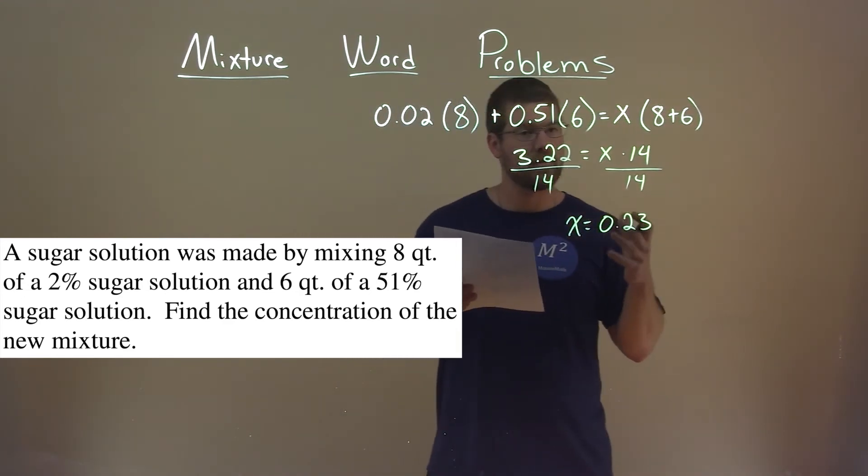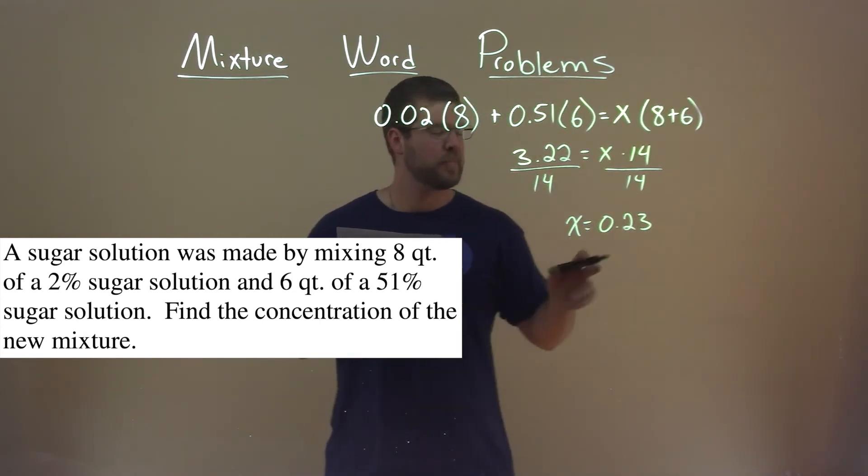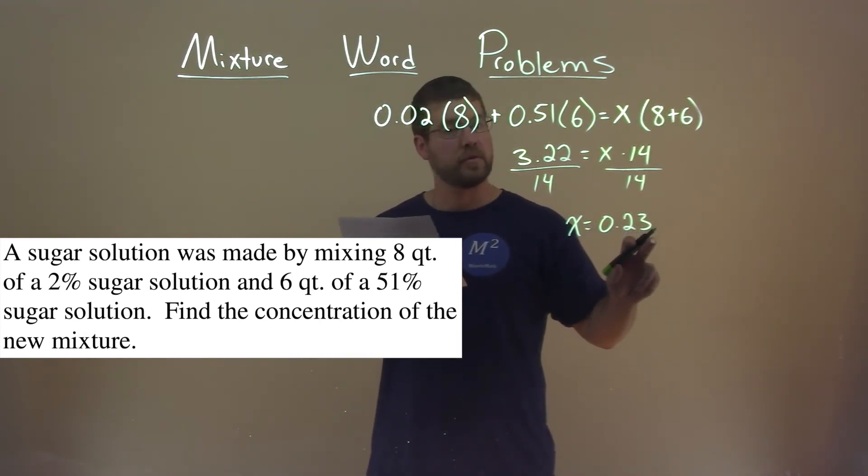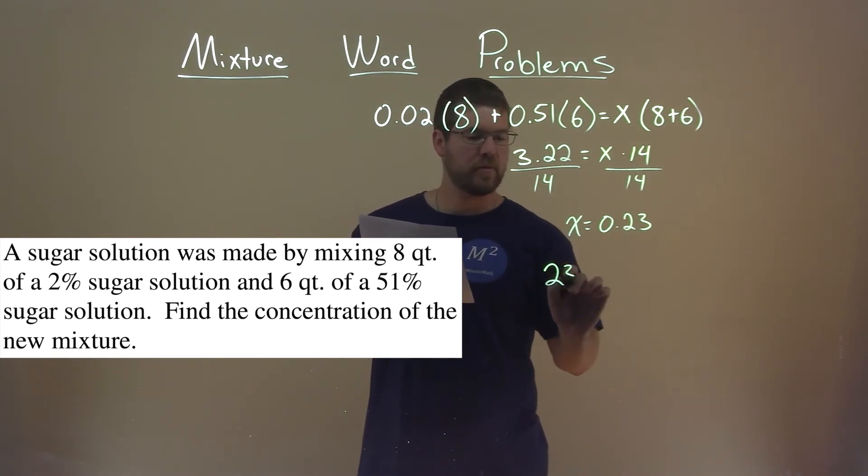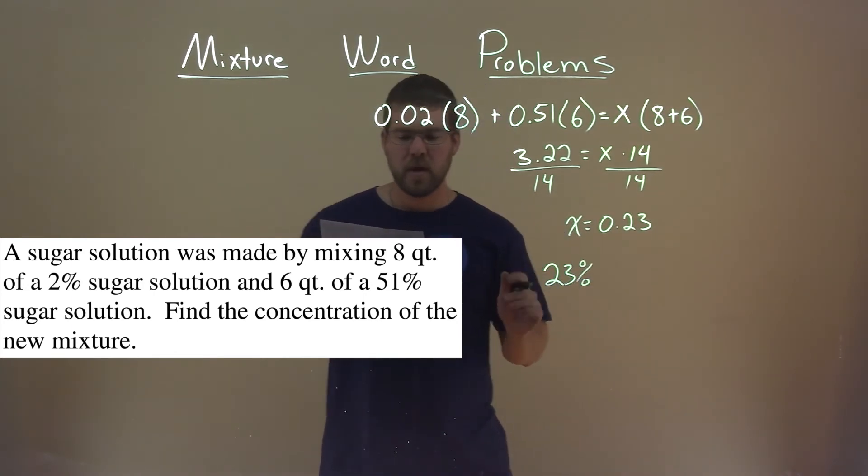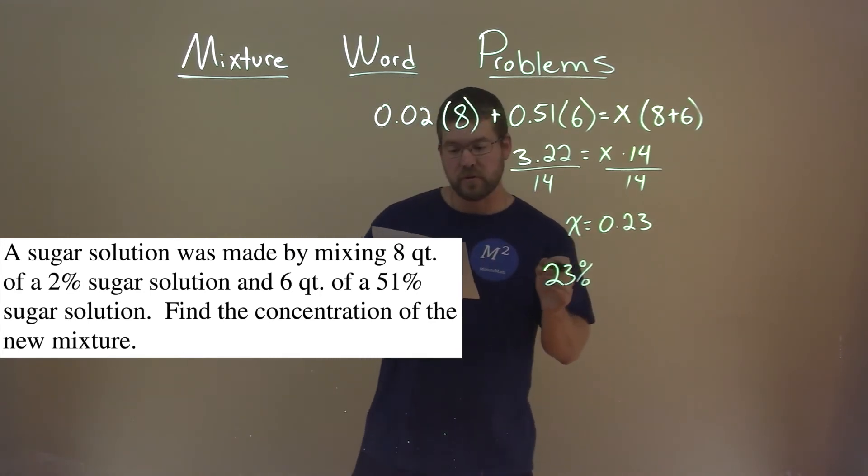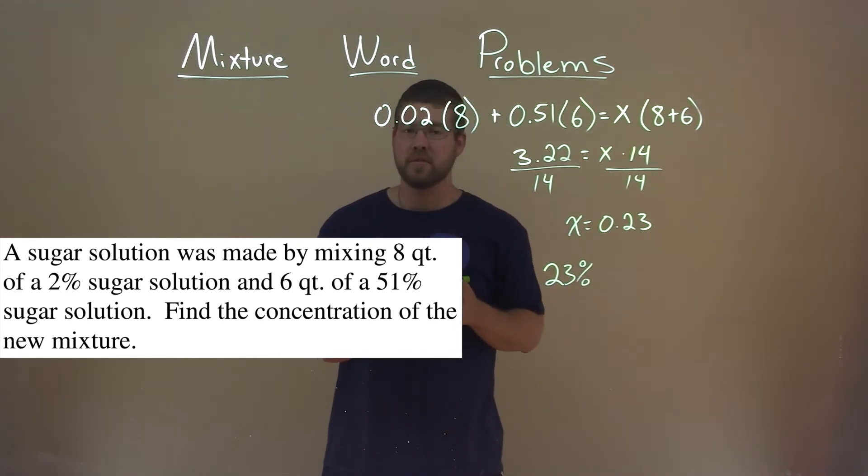But that decimal doesn't help us, or it does help us, but it's not our final answer. 0.23 as a percent, because remember we converted these two percents, 0.23 as a percent is 23%. And so the concentration of the new mixture is 23% sugar solution.